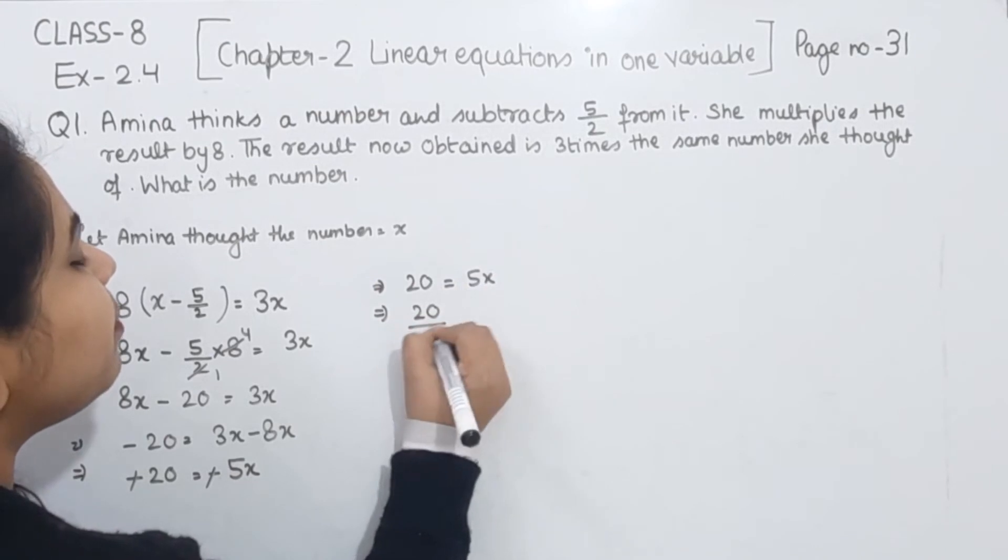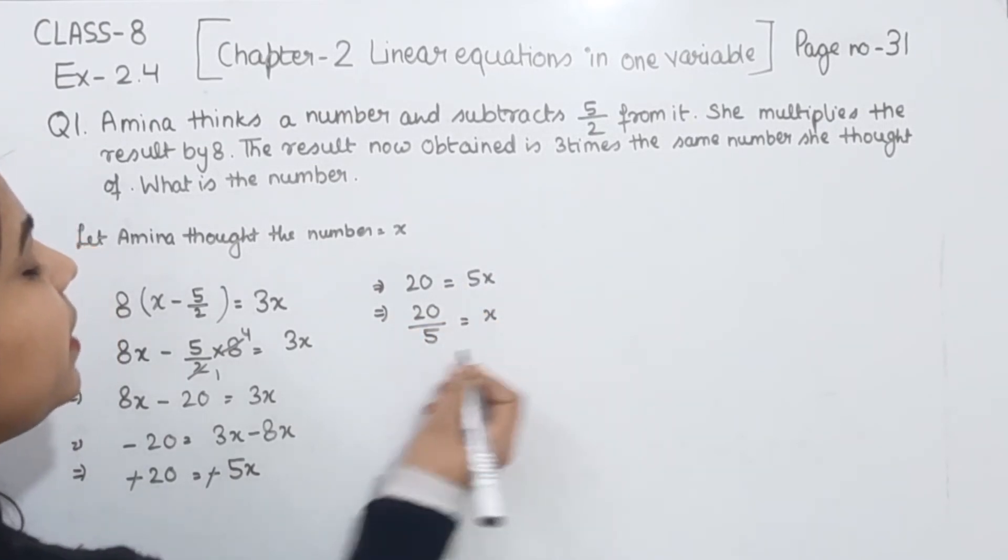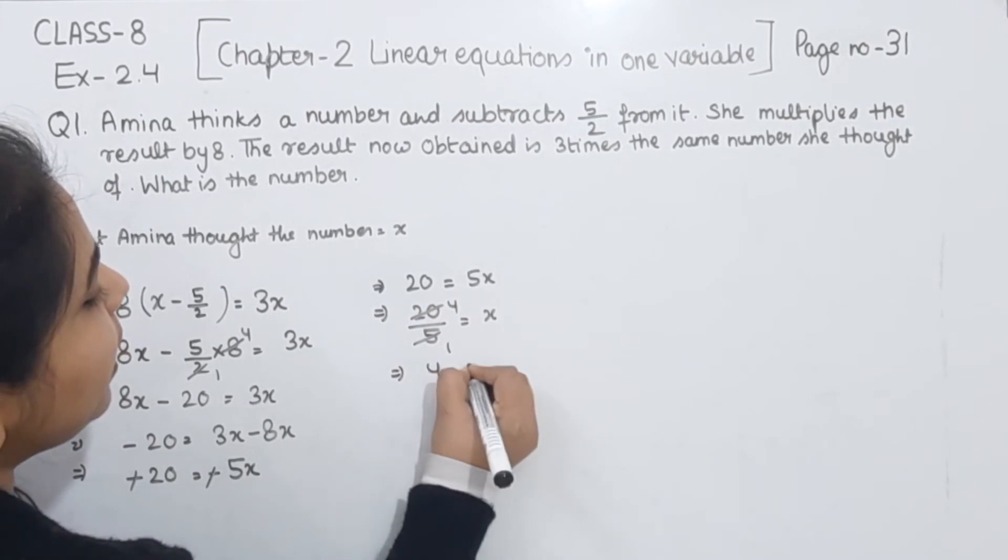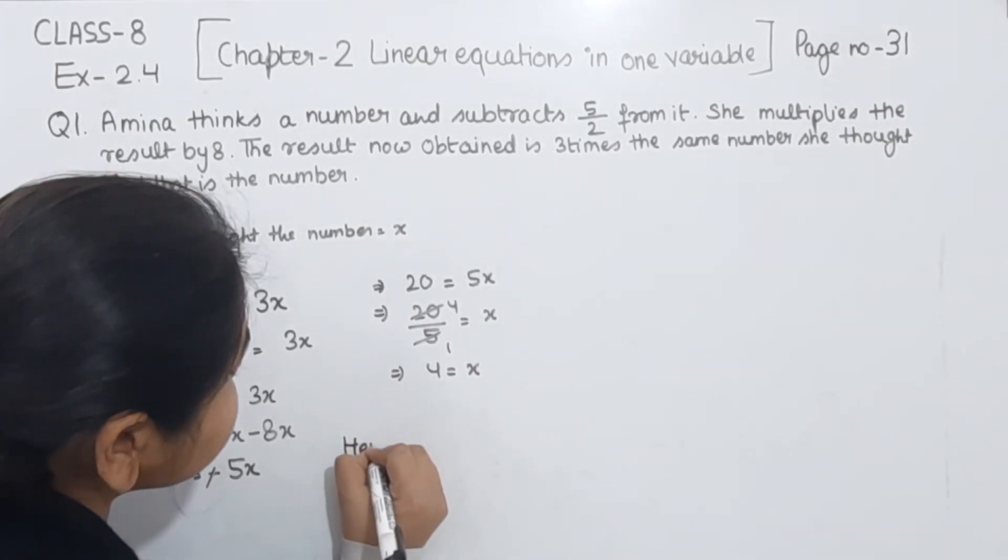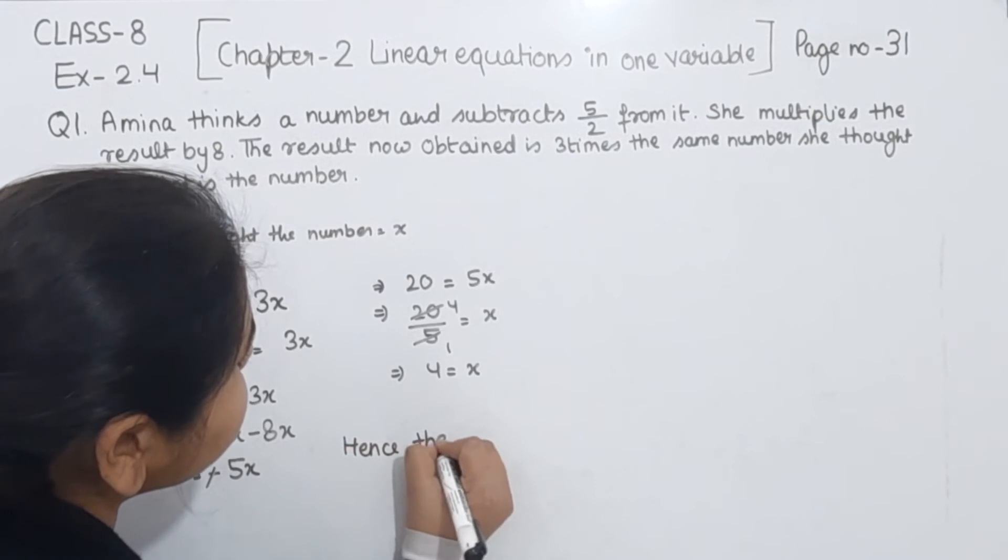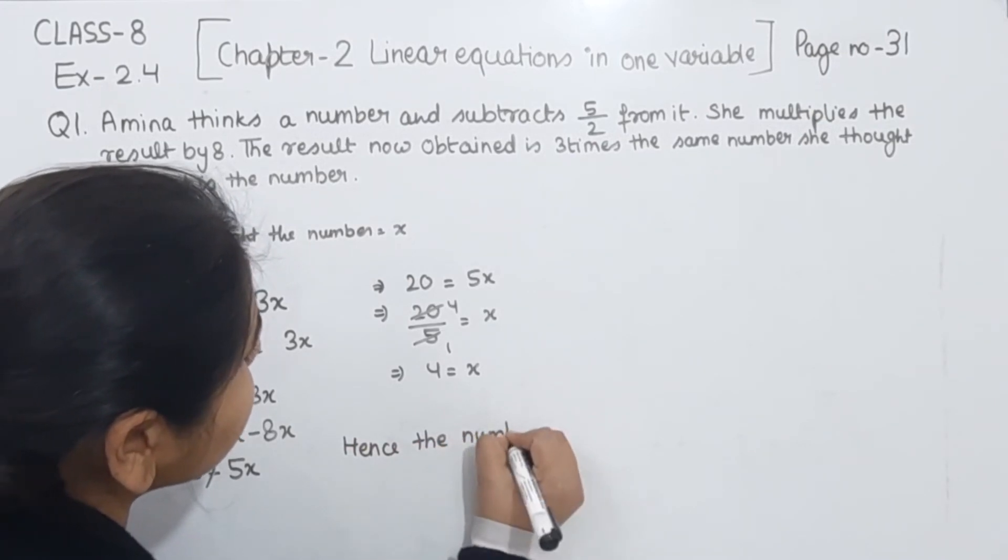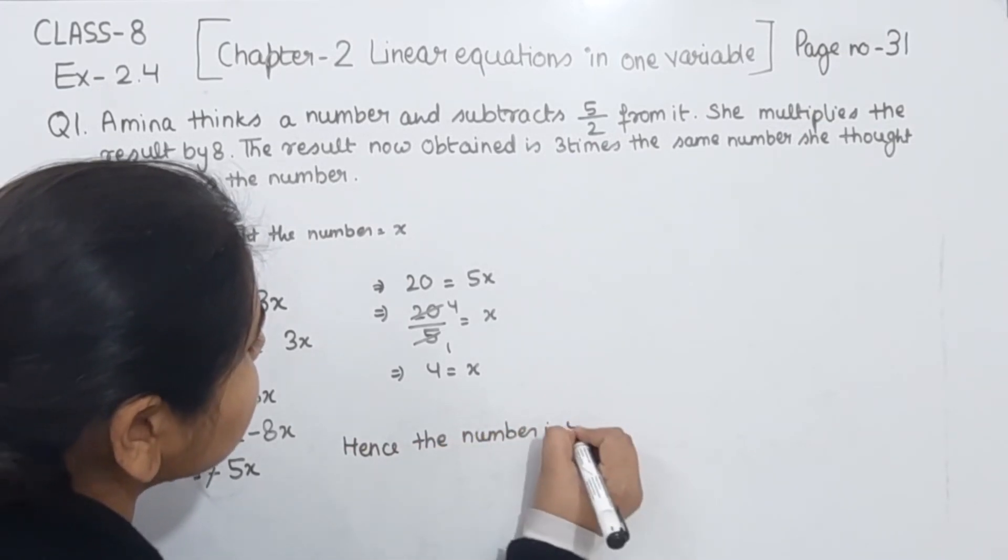Now we will transpose this 5 from right hand side to the left hand side. It will divide here. 5 ones are 5, 5 fours are 20, so the value of x is 4. The number she thought is 4. Hence, the number is 4.